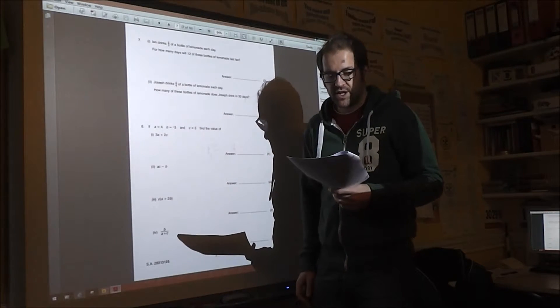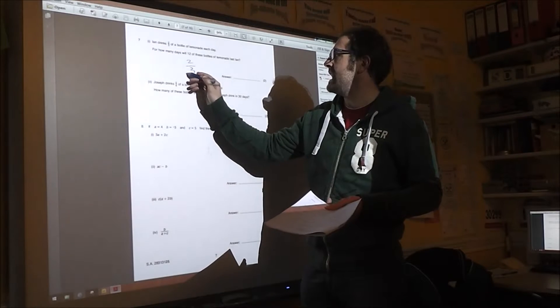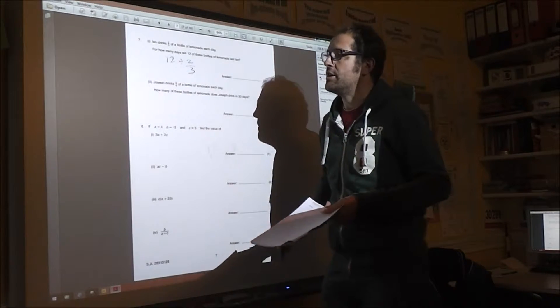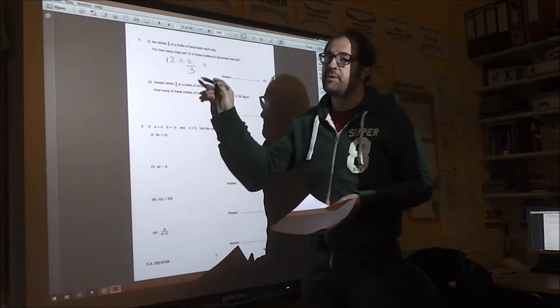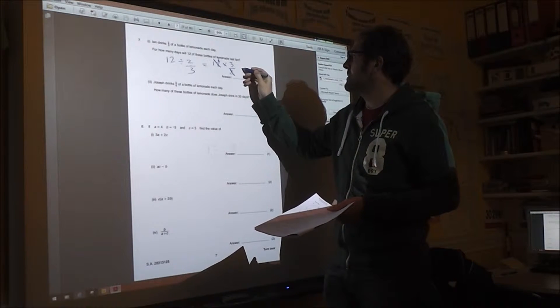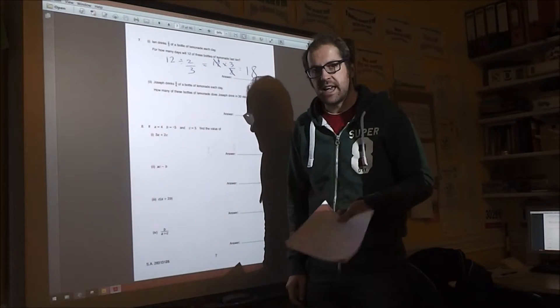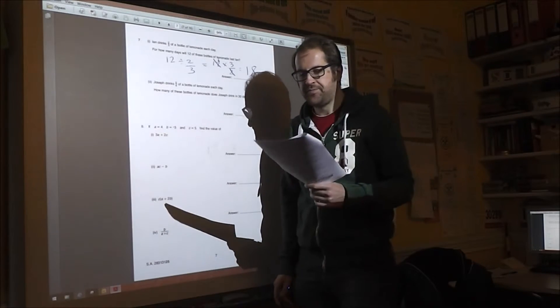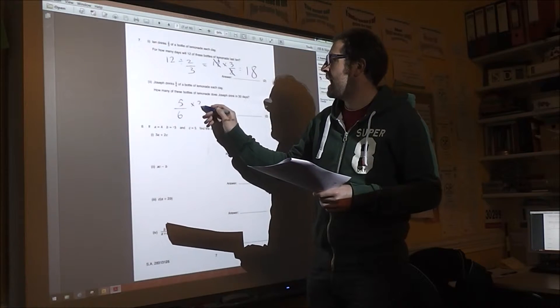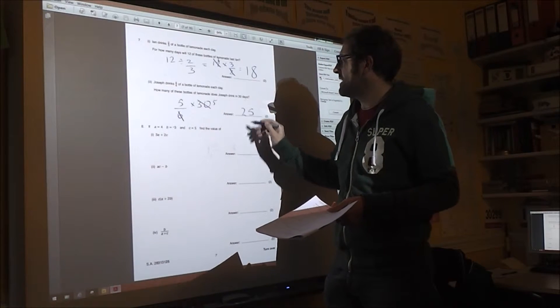Question 7 is more fractions. And then question 8 is substitution. So we've got two thirds of a bottle a day. So we've got 12 bottles. So how many two thirds go into 12? Well, if you divide by a fraction, you turn it upside down and multiply. So you've got 6 times 3, which is 18. 18 days. Which makes sense, because she's not drinking a whole bottle a day. So it's going to last more than 12 days. Joseph drinks 5/6ths every day. And he does that for 30 days. So cross-cancel, 5 fives are 25 days.